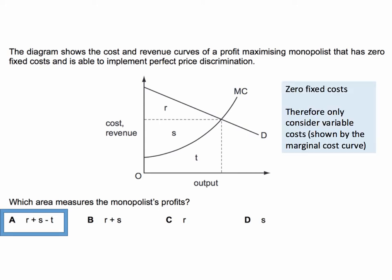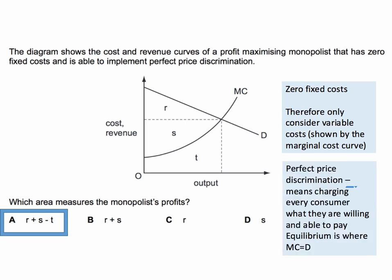Let's go through the reasoning. With zero fixed costs, we only have to consider the variable cost, and that's shown by the marginal cost curve. The firm can engage in perfect price discrimination, meaning they're going to charge each individual consumer what they're willing and able to pay. So the equilibrium output will be where the marginal cost and the demand curve meet.